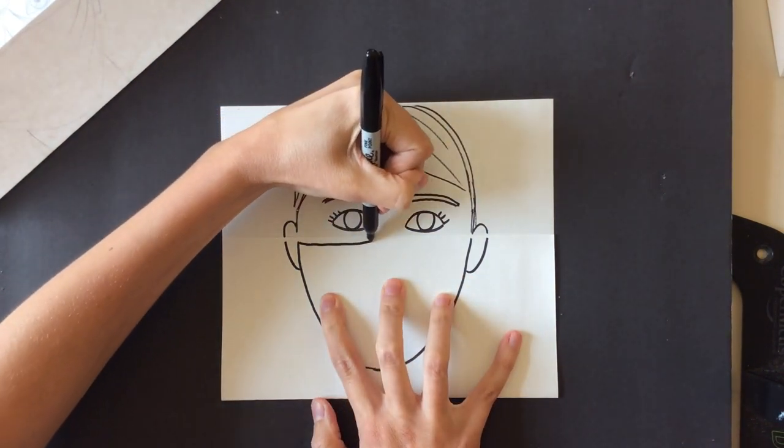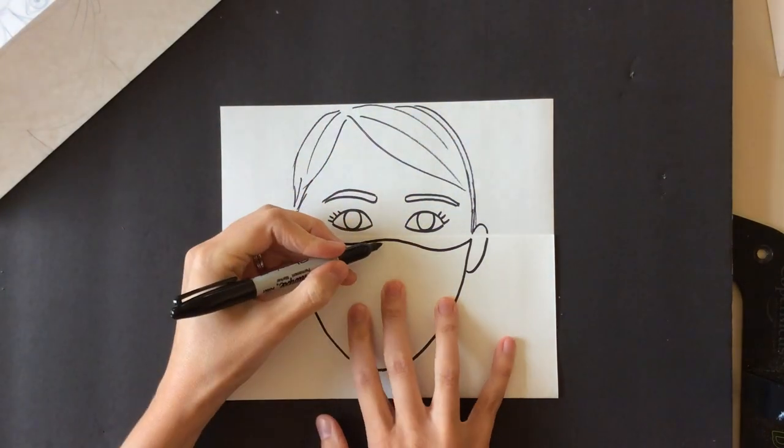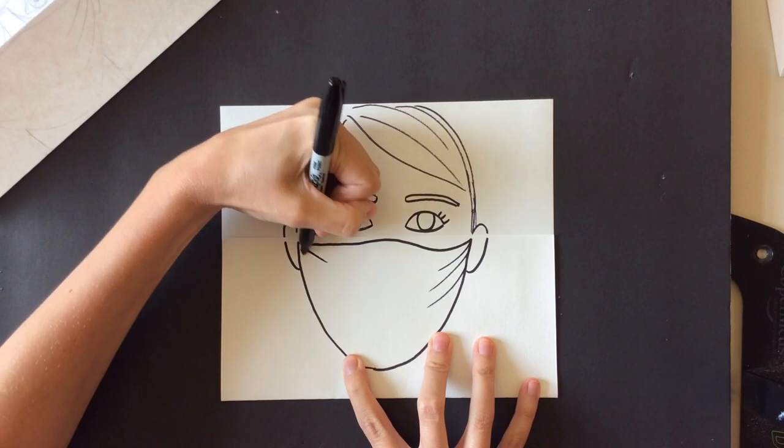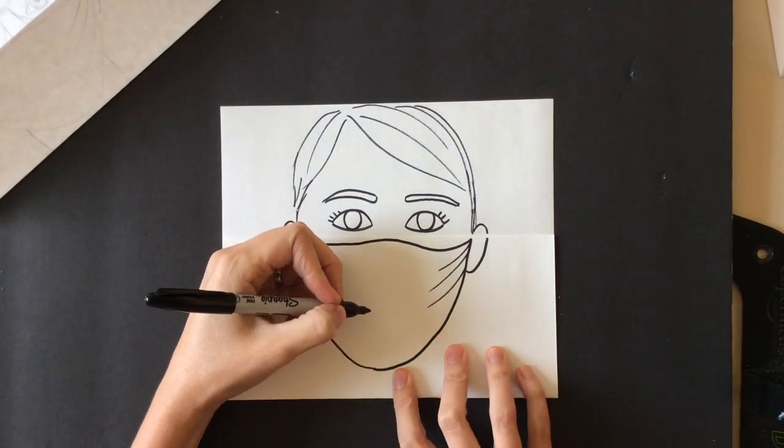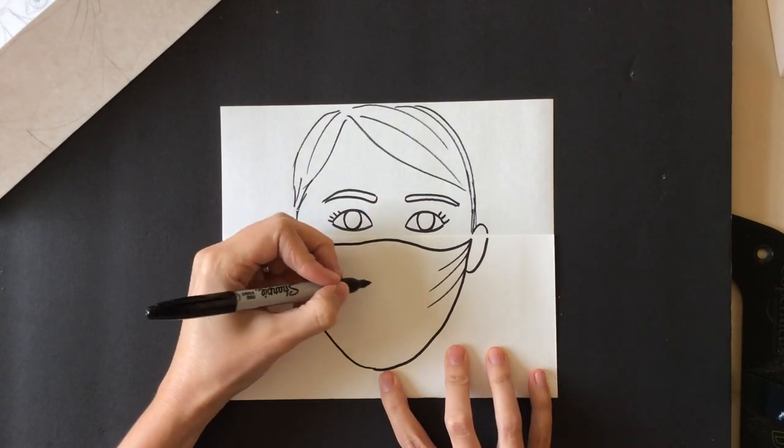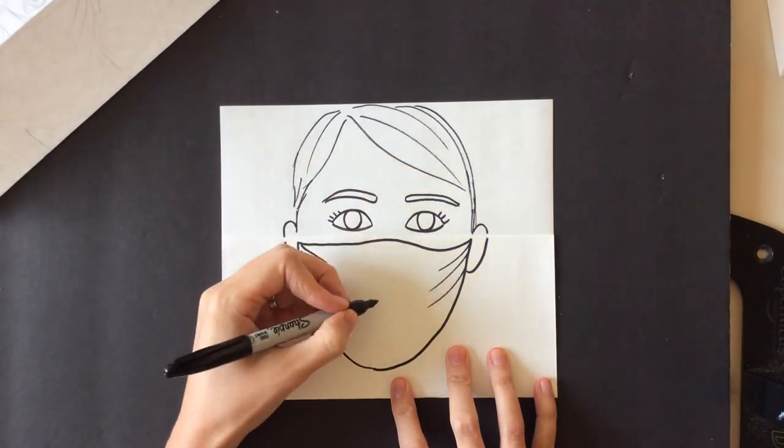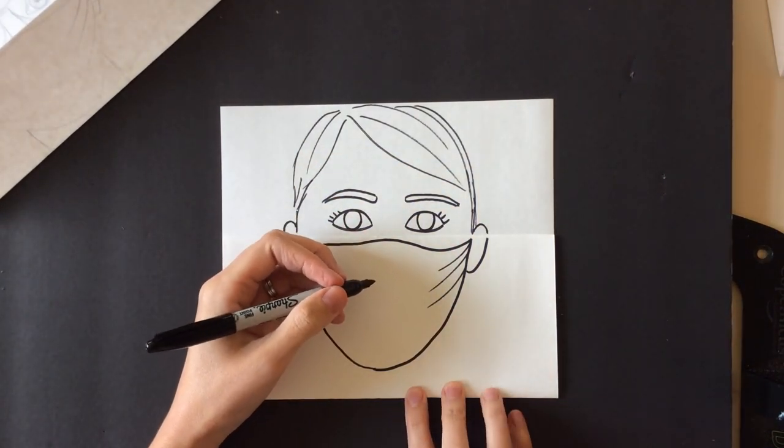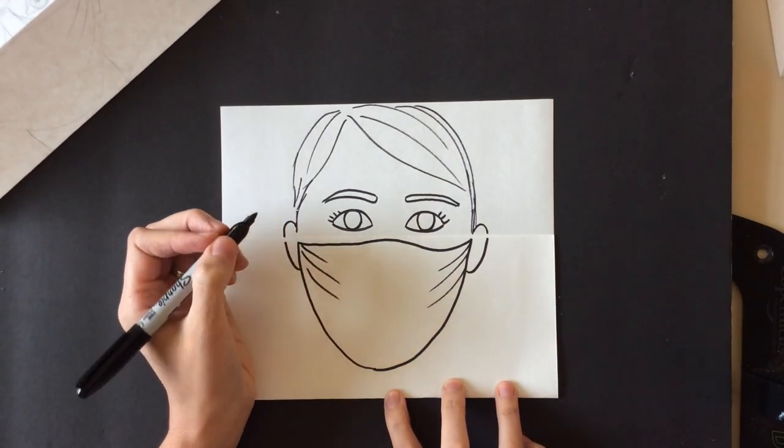Then you do your mask. So you can kind of do like a little line that curves up and down like it's coming over the bridge of your nose. And then I like to do these little lines here to show that it's gathered fabric. And this is where you can kind of have fun too with doing different patterns and things like that. You can get more detailed in the ears. You can really be very expressive on the mask with people having all different patterns and characters and things on their mask. You really have fun with that.